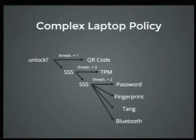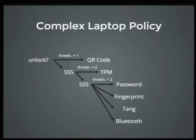Here's a complex policy, but one that actually has real use. Now you can begin to think about how we human beings also relate to these objects. In this policy, we have three layers of nested Shamir's. The first layer has a threshold of one, and has a QR code as its method of input — this is the recovery step. If all else fails, you can scan that QR code to get into the system, and the QR code is kept locked in a safe somewhere.